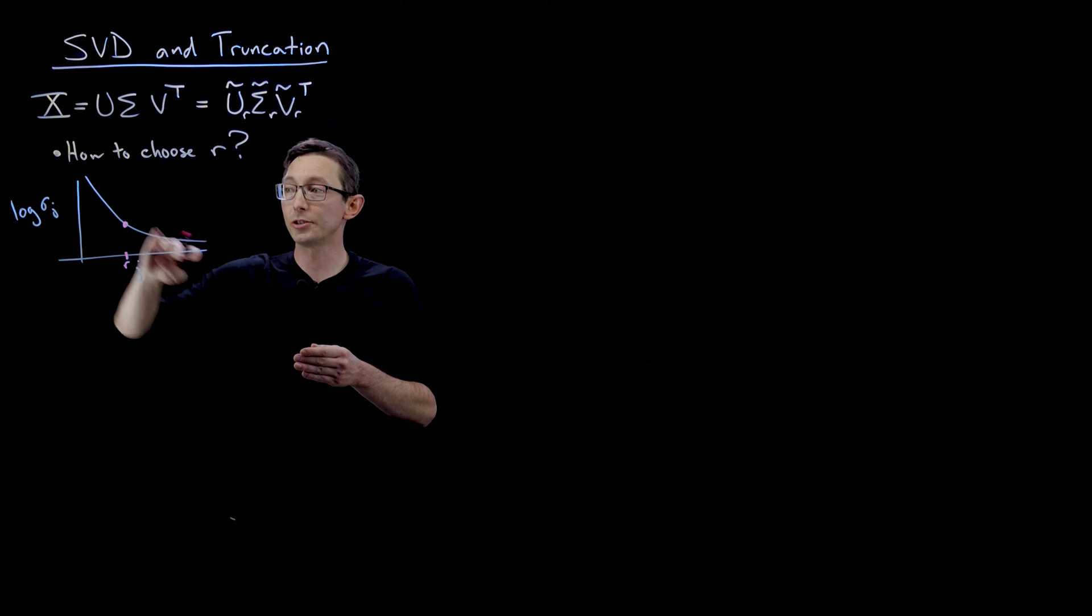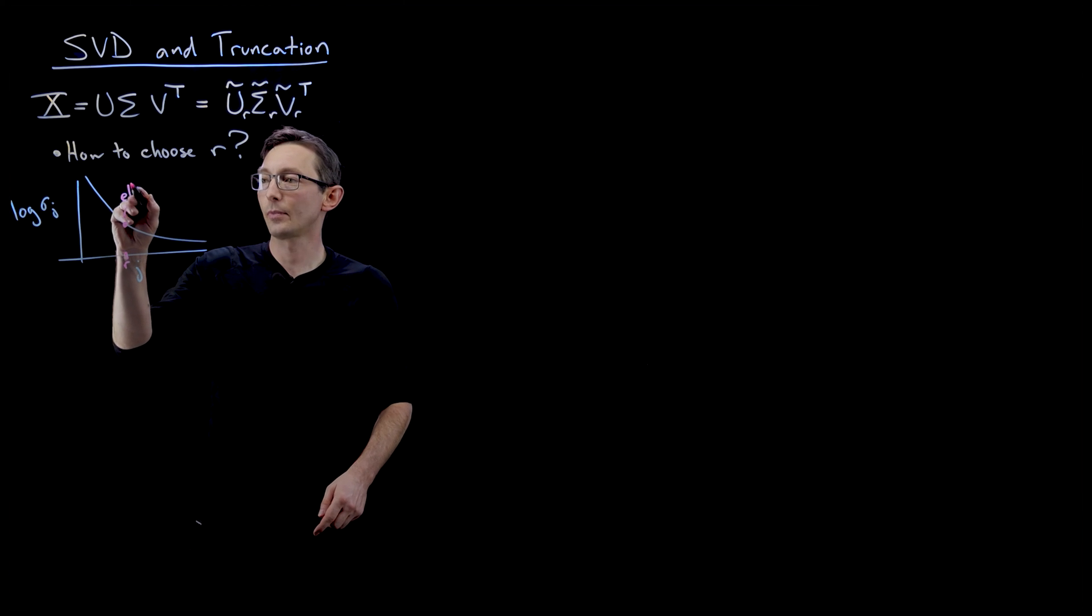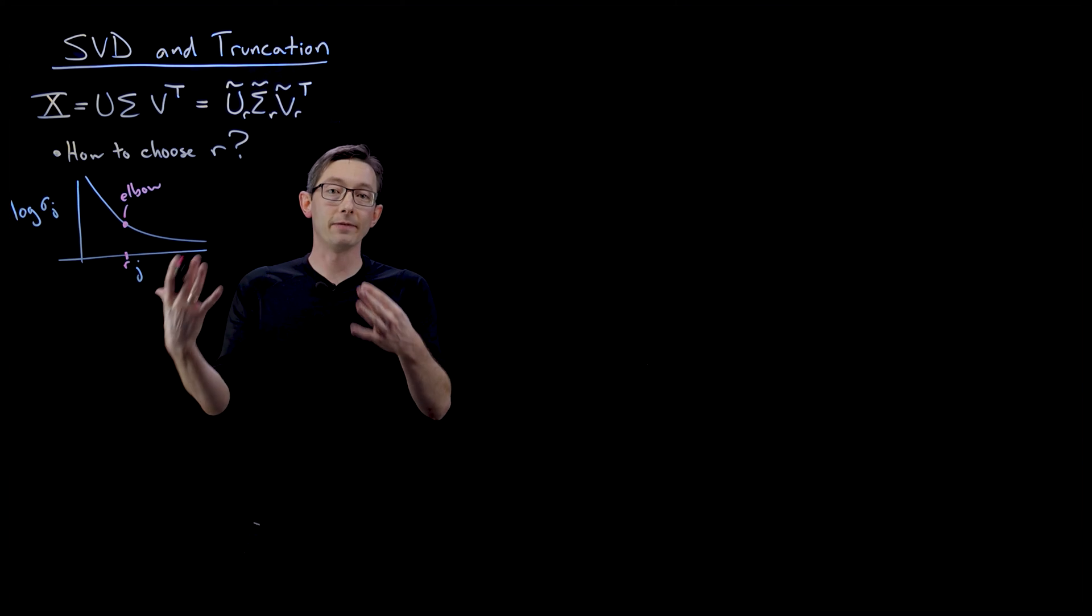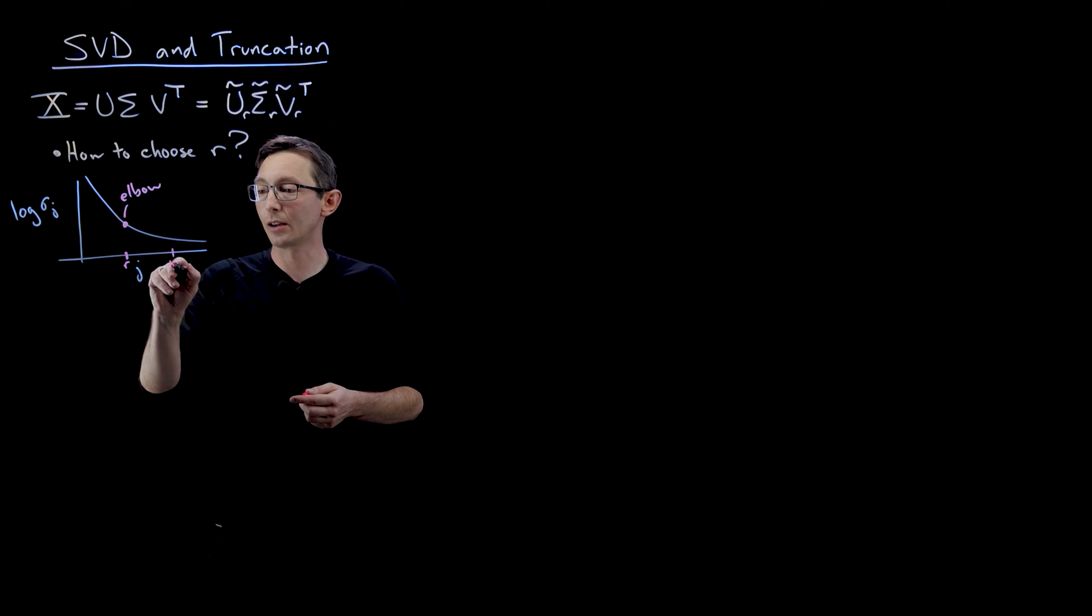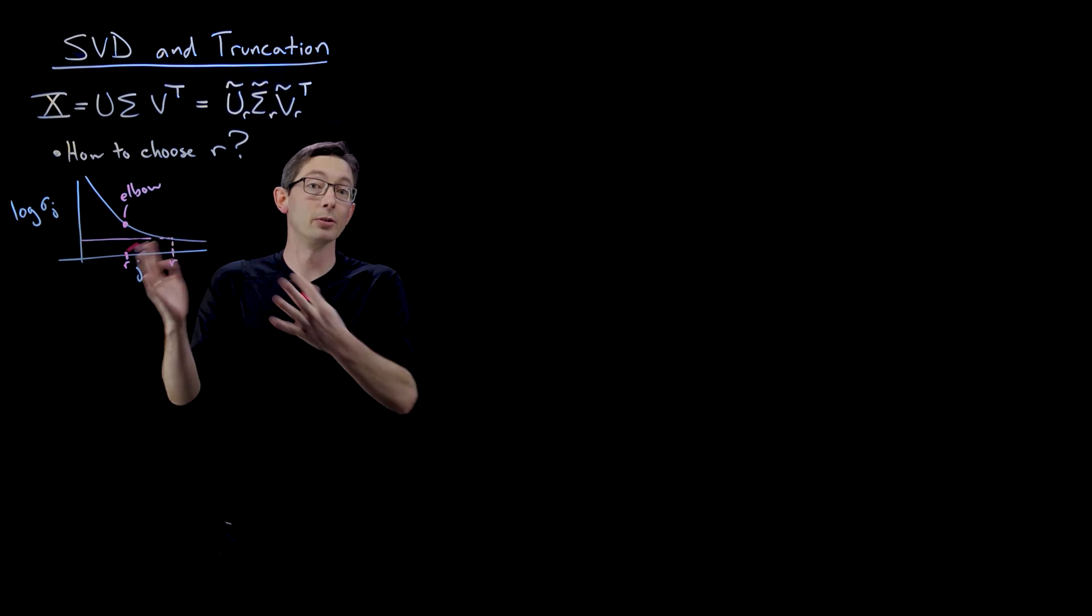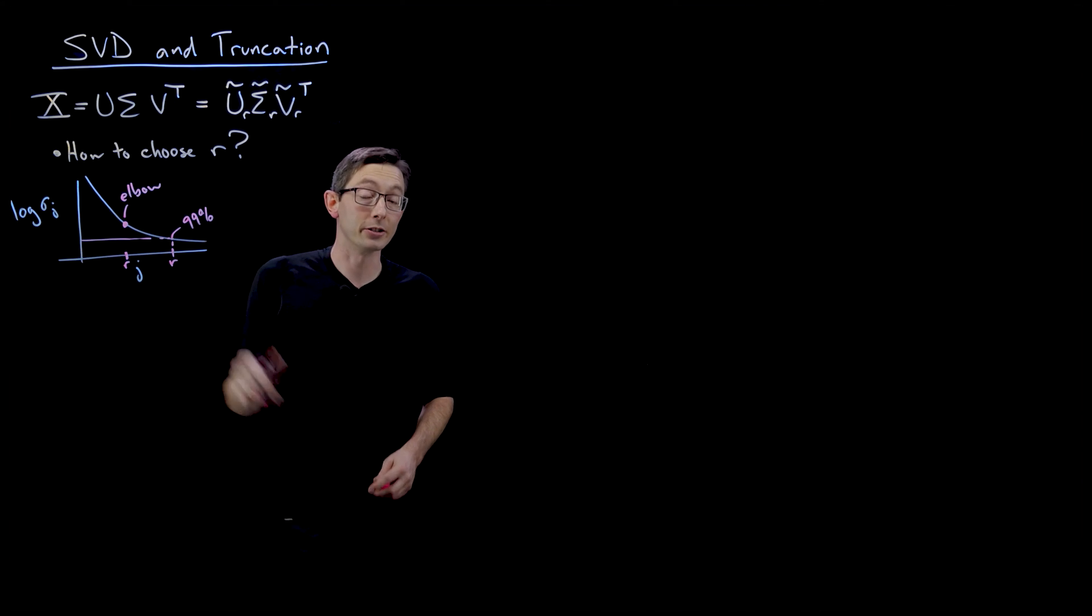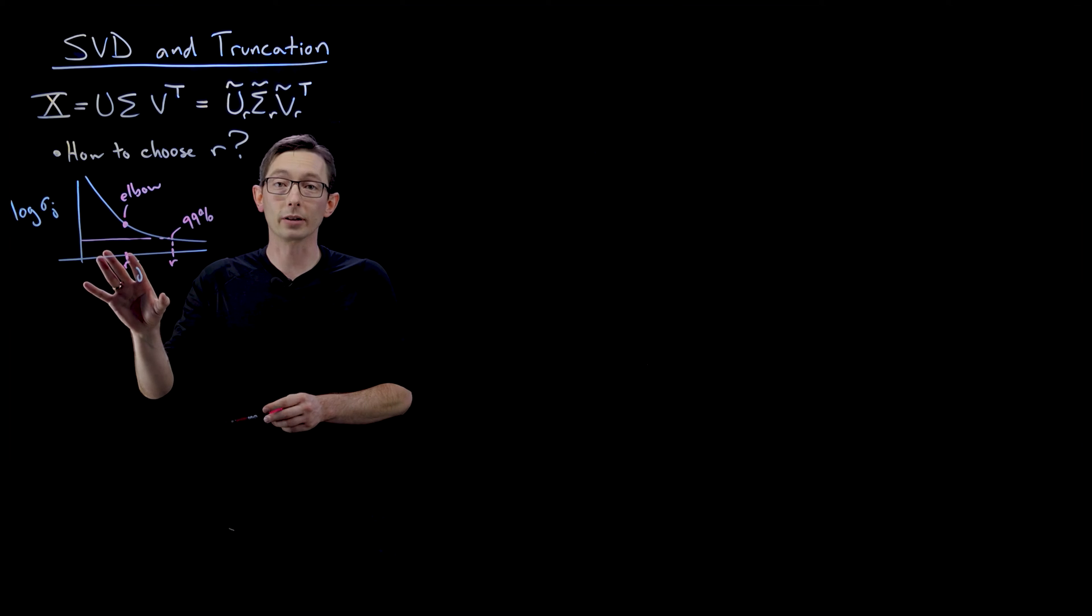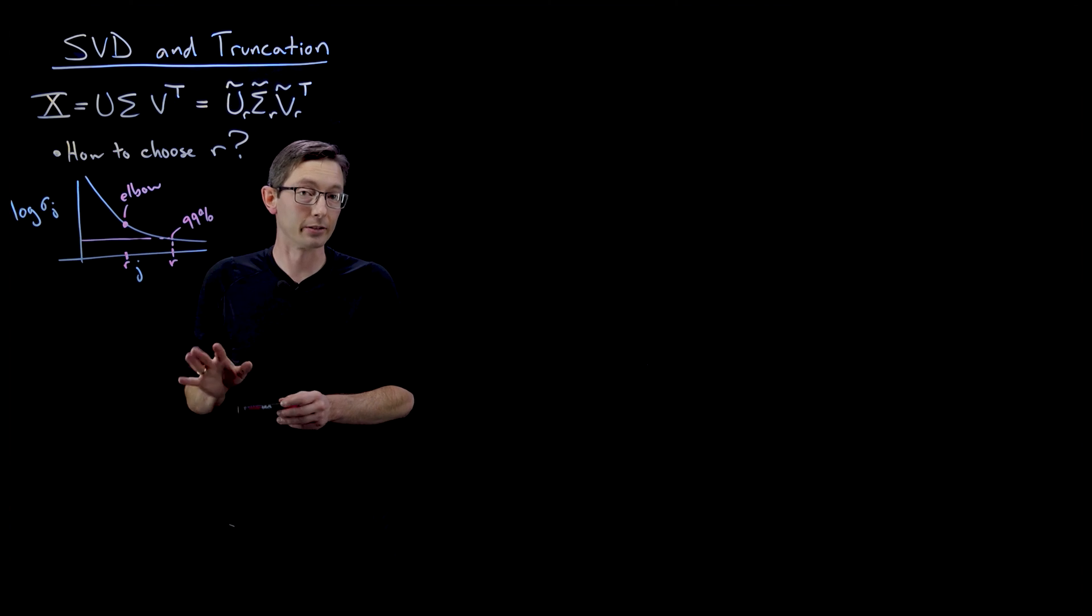Sometimes, so this is an elbow or a knee. Sometimes you'll pick r so that you capture 90 or 95 or 99% of the energy in this. So you'll basically pick r so that everything above this r is 99% of the distribution and everything below is only 1%. So sometimes you'll do it based on the percentage of variance or energy explained. I would argue that these are very heuristic and they don't work that well unless you have a really clean, sharp drop off in your singular values.